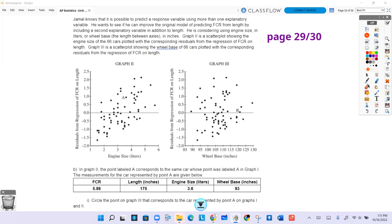This value here, that distance, is going to have the same residual as wherever we're looking for over here. In graph two, the point labeled A corresponds to the same car whose point was labeled A in graph one. If you remember in graph one, that residual was 0.955.